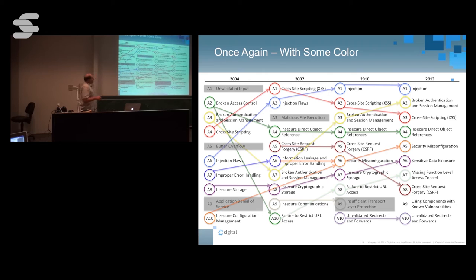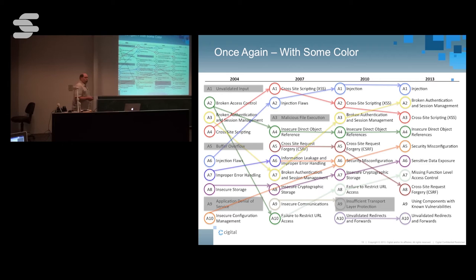The other interesting thing about the new top 10: the gray items are the ones that fell off the list, and ones without an arrow coming into them are brand new. We had this one new entry — using components with known vulnerabilities — and we'll come back to that, because that's something we also see a fair amount of. When we do what we call architecture analysis, dependency analysis is the thing that ties back to known vulnerabilities with the software we bring into our universe.